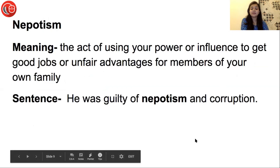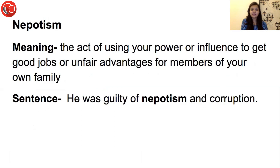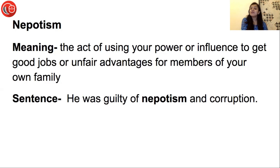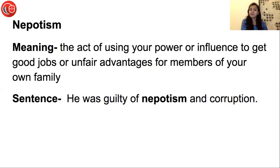Next word is Nepotism. Nepotism बहुत ही common word है, हमने business studies में ये पढ़ा ही होगा। Meaning: the act of using your power or influence to get good jobs or unfair advantages for members of your own family. जब आप अपनी power और position अपने family members के लिए use करते हो, उन्हें अच्छी job दिलवाने के लिए, या उनको unfair advantages देते हो, so that is called nepotism. Sentence: He was guilty of nepotism and corruption — उसको nepotism का कुसूरवार ठहराया था कि वो अपने family members को unfair advantages provide कर रहा है और corruption कर रहा है।